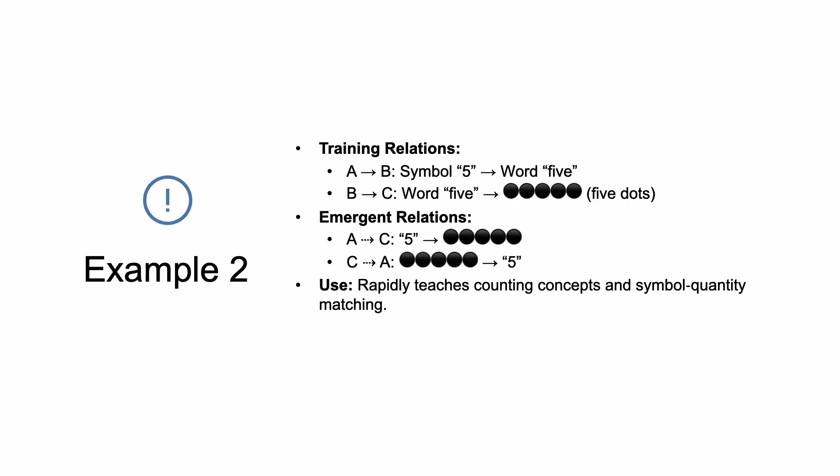For numbers: you show them a five on a card and teach them to say 'five,' then when you say 'five' they select five dots. The emergent relations are: when shown the card with the five, they select the five dots, and when shown the five dots, they select the card with the symbol. For early math — identifying five, six, and all the different representations — you can see how important this is.